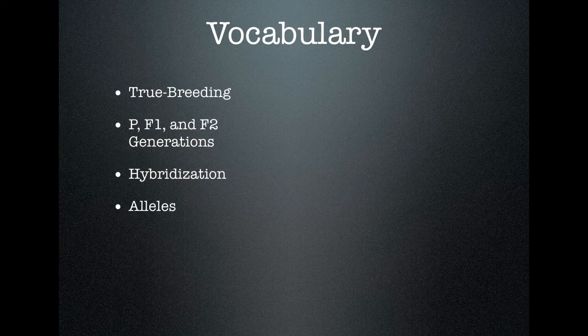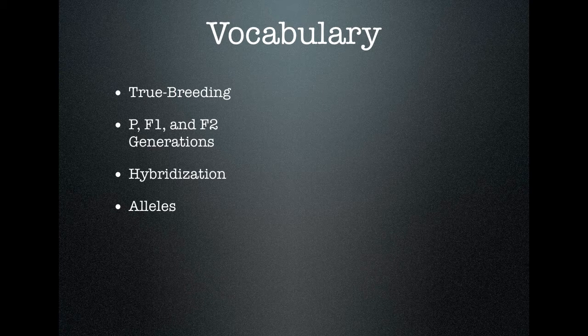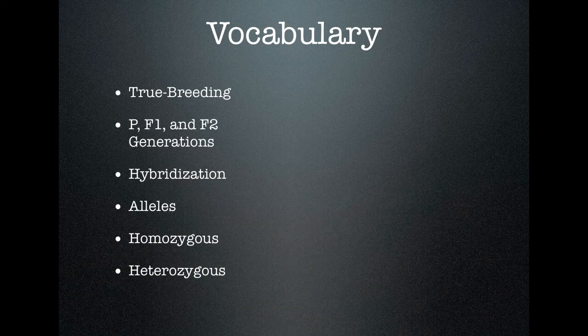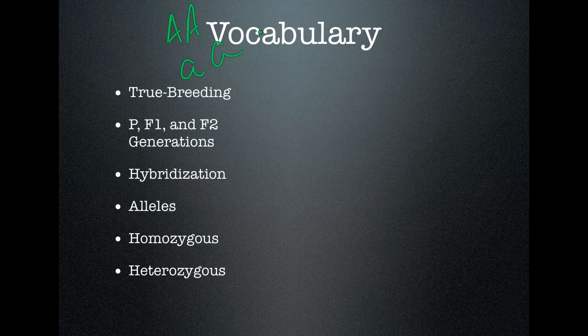Alleles: every trait has more than one form. I'm sure you've probably heard of dominant and recessive genes. For eye color, there could be a dominant gene for brown and a recessive gene for blue — both of those are alleles of the gene for eye color. Alleles are different forms of a gene for a single trait. Homozygous means you carry either two dominant alleles or two recessive alleles. Heterozygous means your genetic makeup for a particular trait has one dominant and one recessive allele. Homo means same, hetero means different. Homozygous would be notated as big A big A or little a little a; heterozygous would be one big A, one little a.